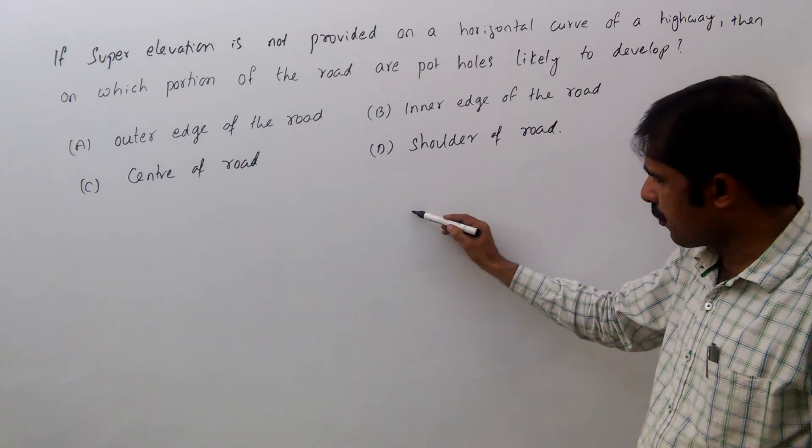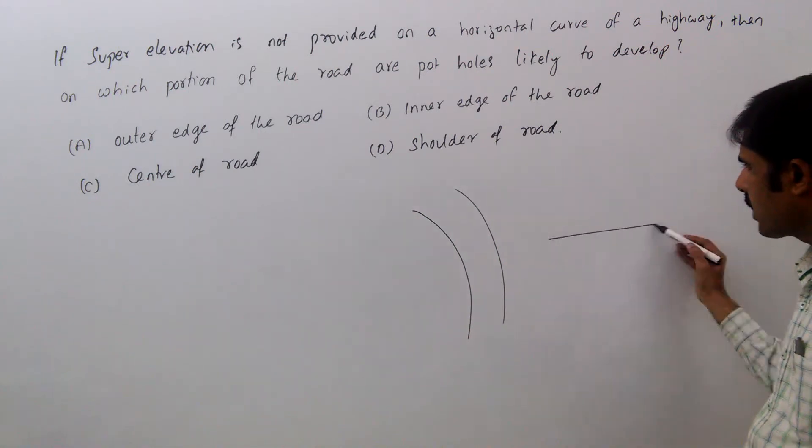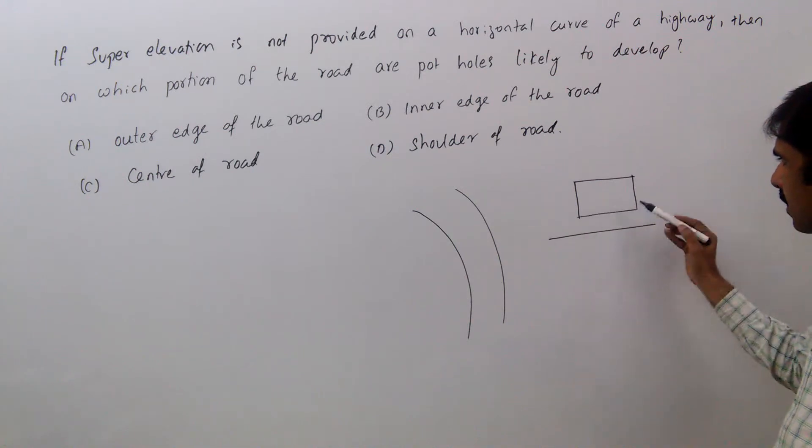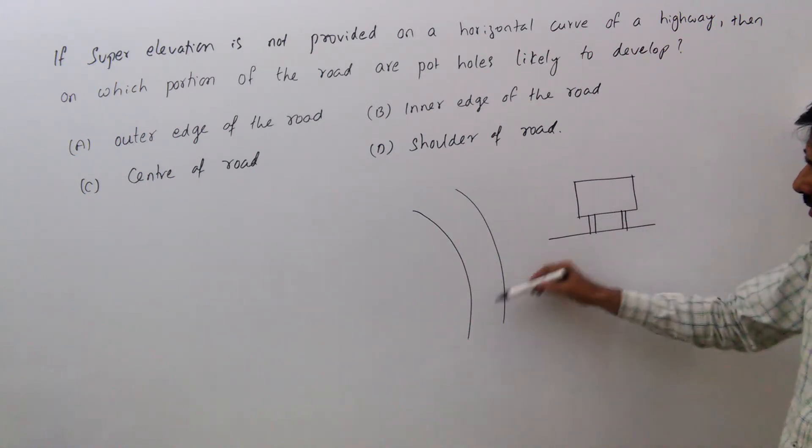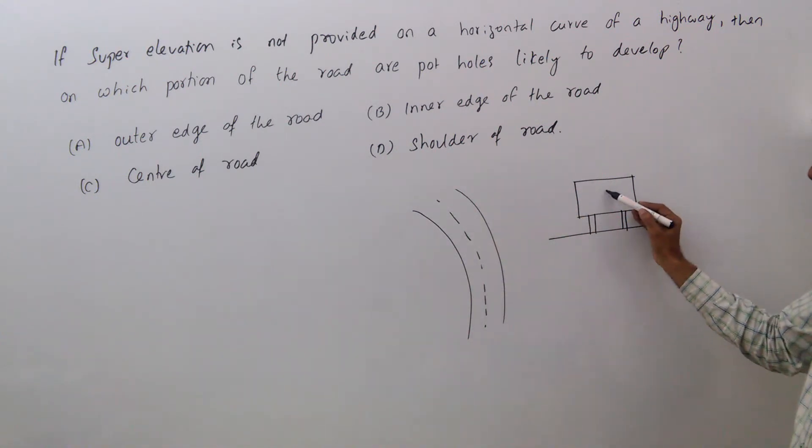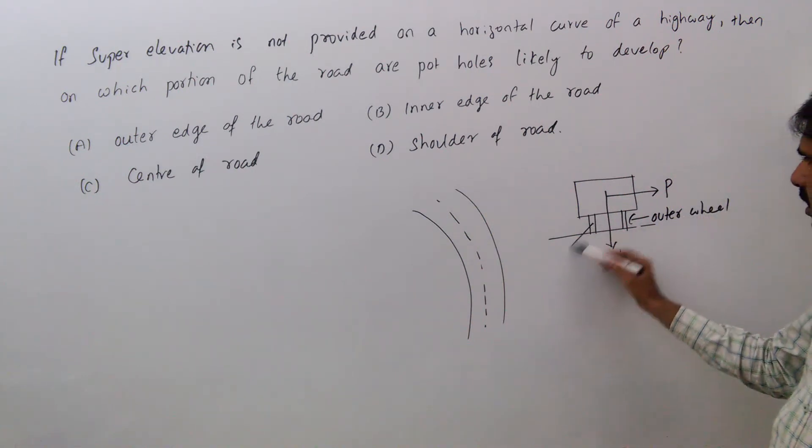Due to centrifugal force, if super elevation is not provided, then the road is flat like this. One centrifugal force will be there like this. Due to this, this is the outer wheel, this is the inner wheel.